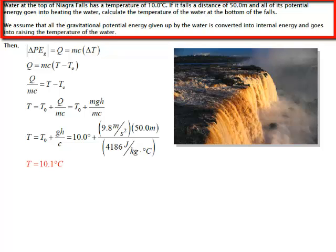Calculate the temperature of the water at the bottom of the falls. In this problem we're going to assume that all of the gravitational potential energy given up by the water is converted into internal energy and goes into raising the temperature of the water.